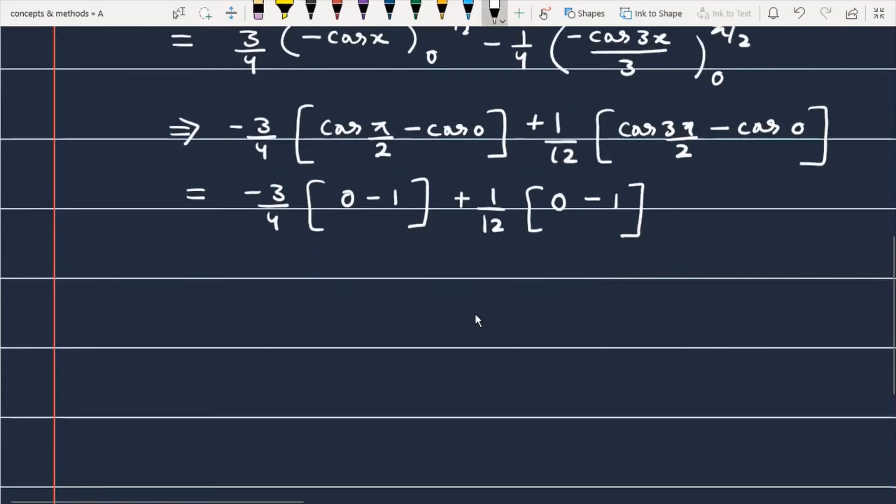Now we will see what our answer is. The first term is 3 by 4, and we can write 1 by 12. If I simplify this further, 12 is the LCM, and here you can write 9 minus 1, this is 8 by 12, or you can write it as 2 by 3. So finally, this is the proof for the given question.